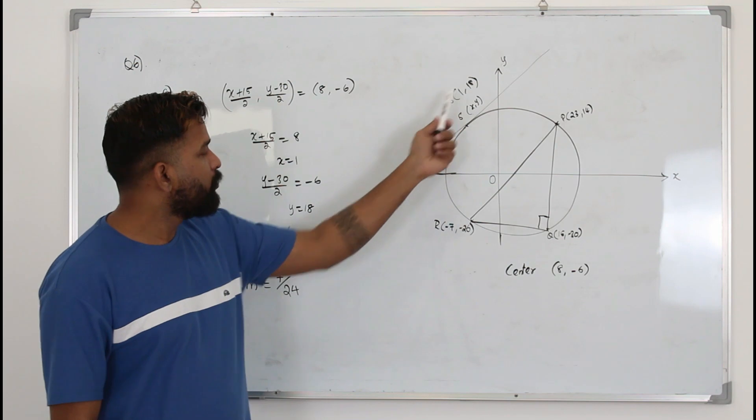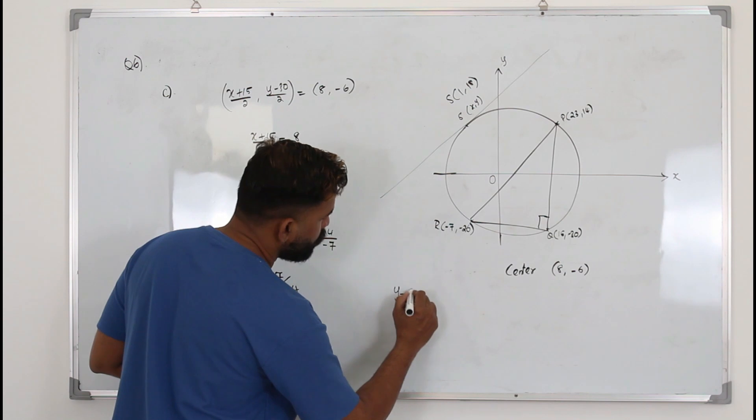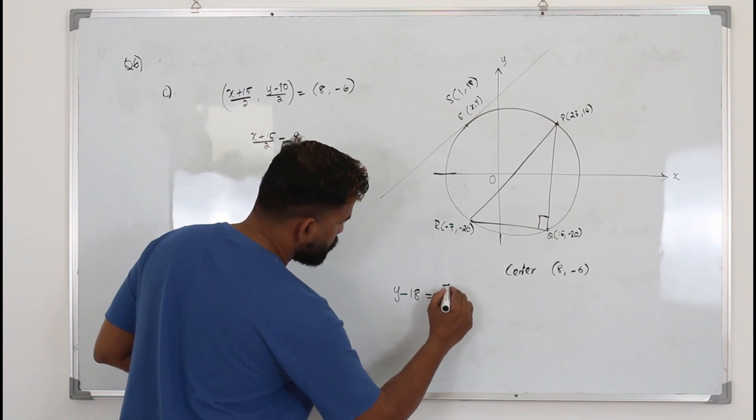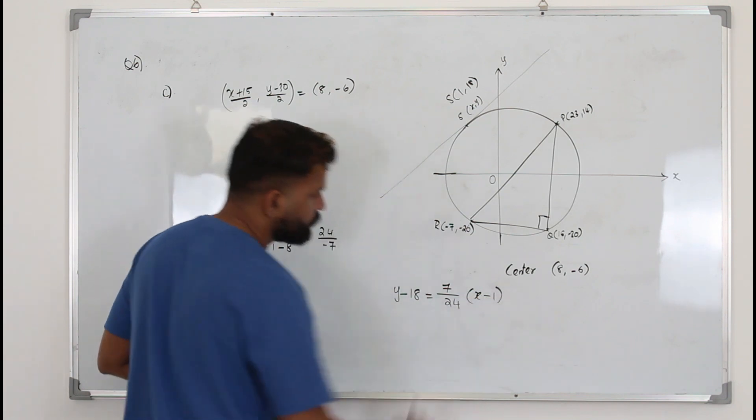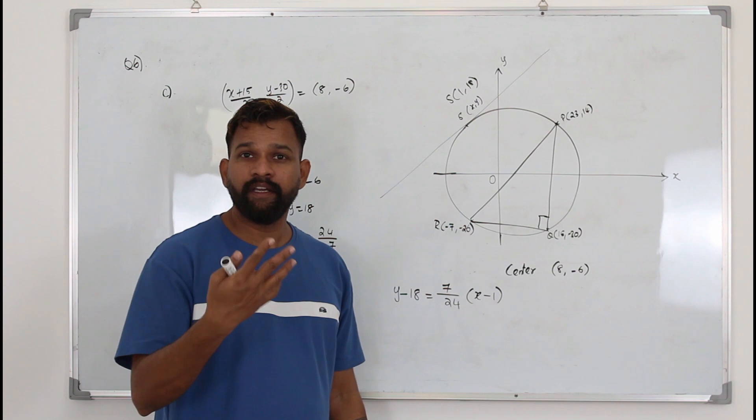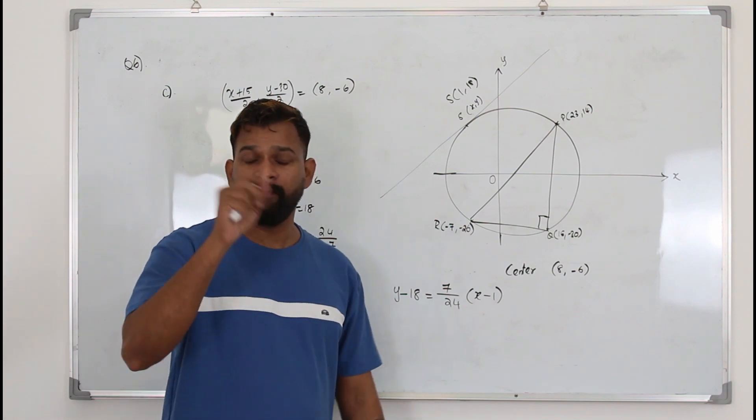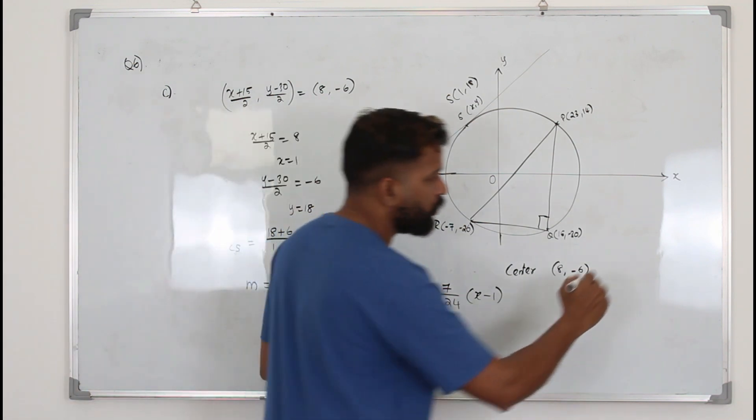Now you have a point and a slope. You can write the equation as y minus y1 equals slope times x minus x1. But whenever they say find the equation of tangent or normal, you have to read the question carefully because sometimes they want the answer in this form.